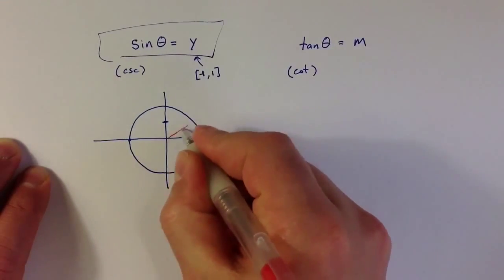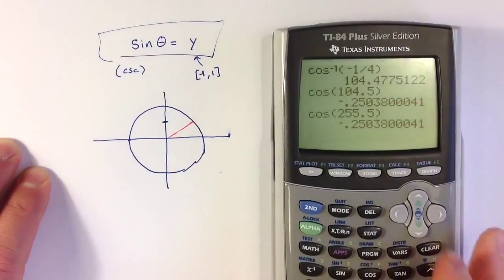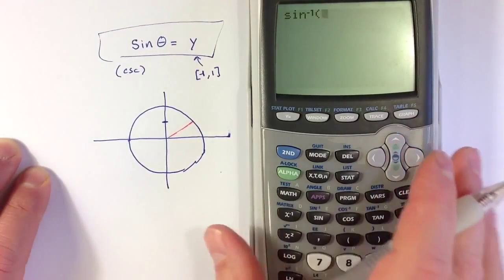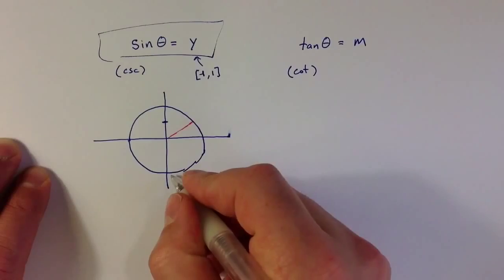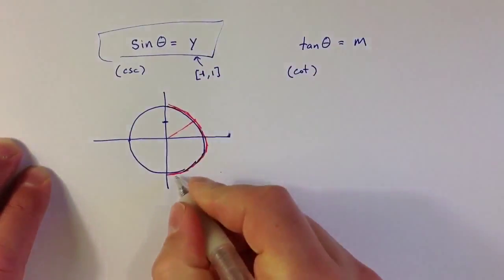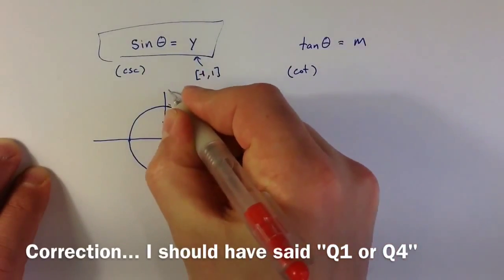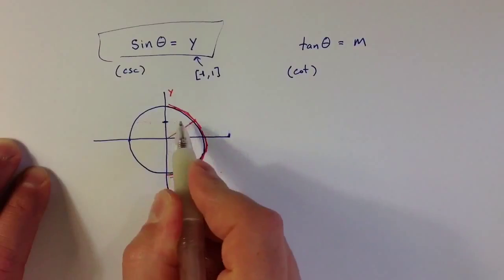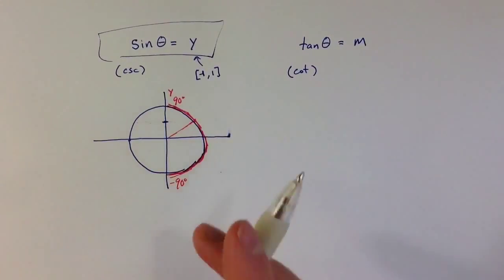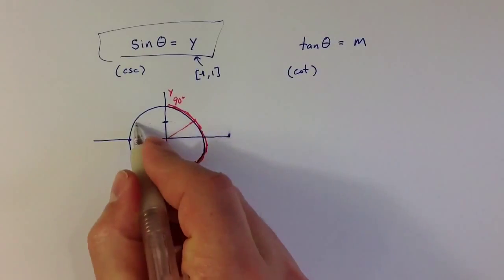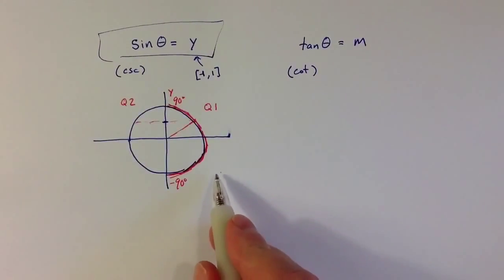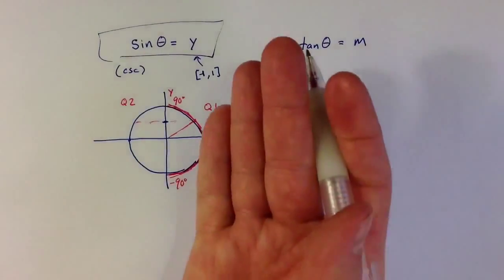Using the calculator, inverse sine gives us angles between negative 90 and 90 degrees, or between negative π/2 and π/2. So the solution from inverse sine would be in either quadrant 1 or quadrant 4. For sine, there will be a second solution at the same height: if the first solution is in quadrant 1, the second solution is in quadrant 2; if the first is in quadrant 4, the second is in quadrant 3, where the y-value is the same.